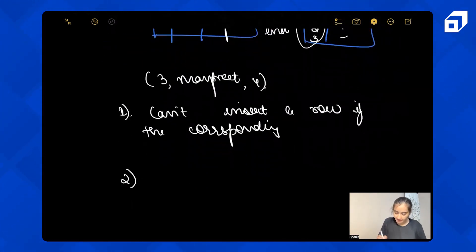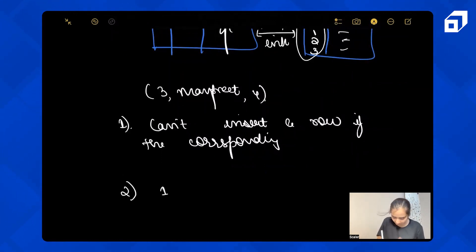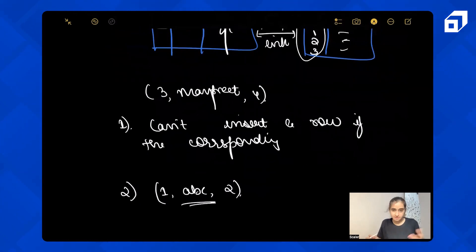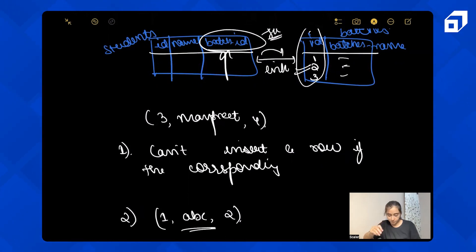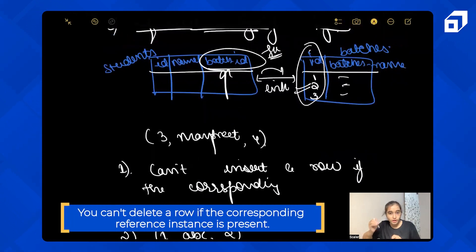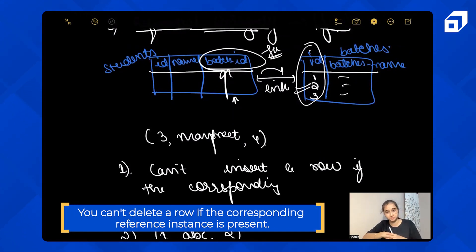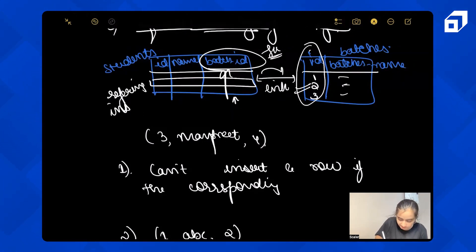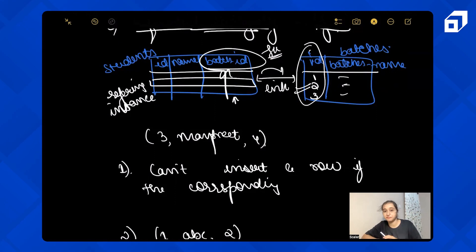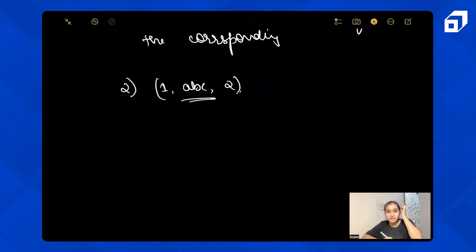The second part of referential integrity: if a student row references batch_ID 2, you can't delete batch ID 2 from the Batches table while that referring instance still exists. You first have to delete the referring instance, then you can delete the referenced row. So if a referring instance is present in the table, you can't delete the referred instance.